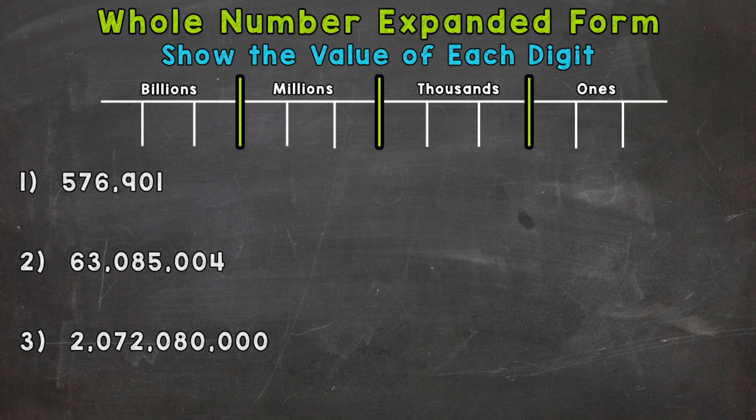I have a place value chart at the top of the screen. We're going to use that for number one, and a place value chart can be very helpful when first starting out or if you're not really understanding. It helps break the numbers down and see exactly where each digit is. But your ultimate goal is to be able to do expanded form without a place value chart.